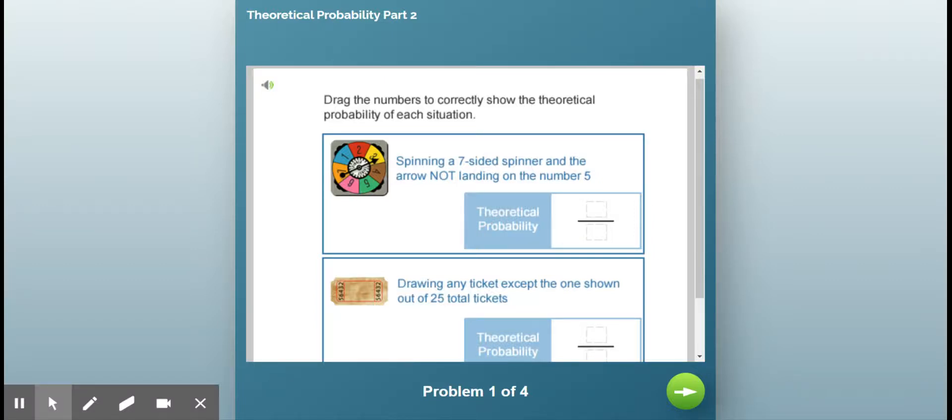So today we are supposed to finish up theoretical probability, so I'm calling this theoretical probability part two, and this involves the opposite of probability. We call it the complement of probability.